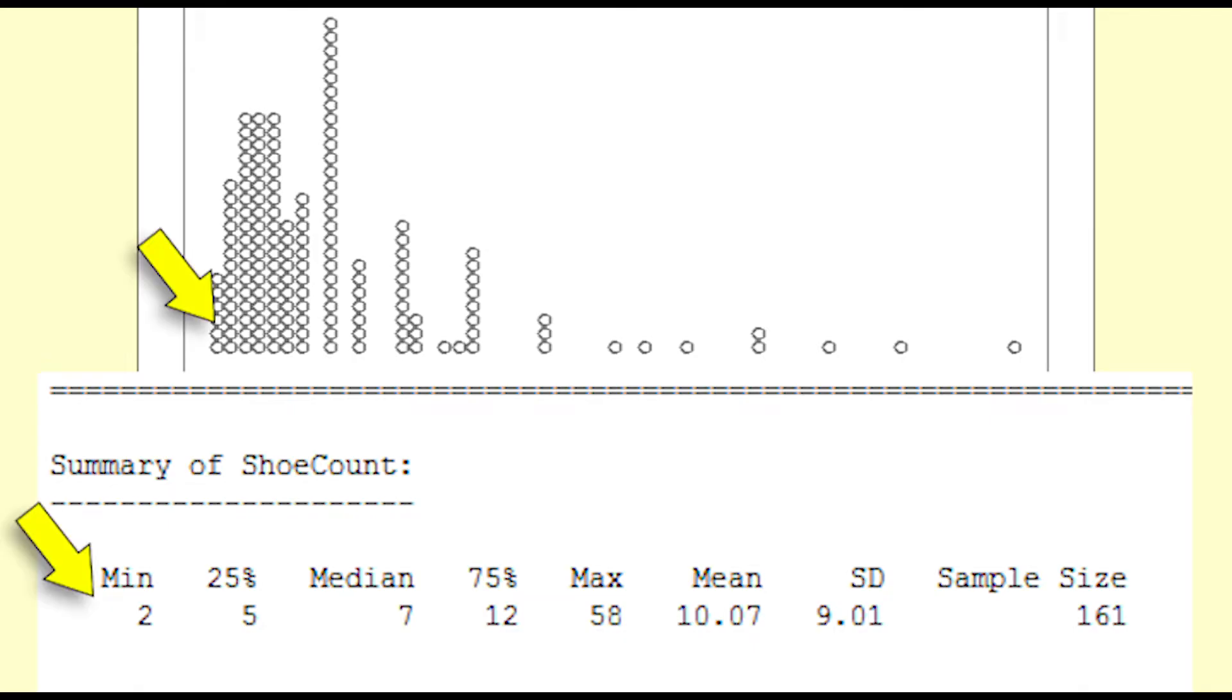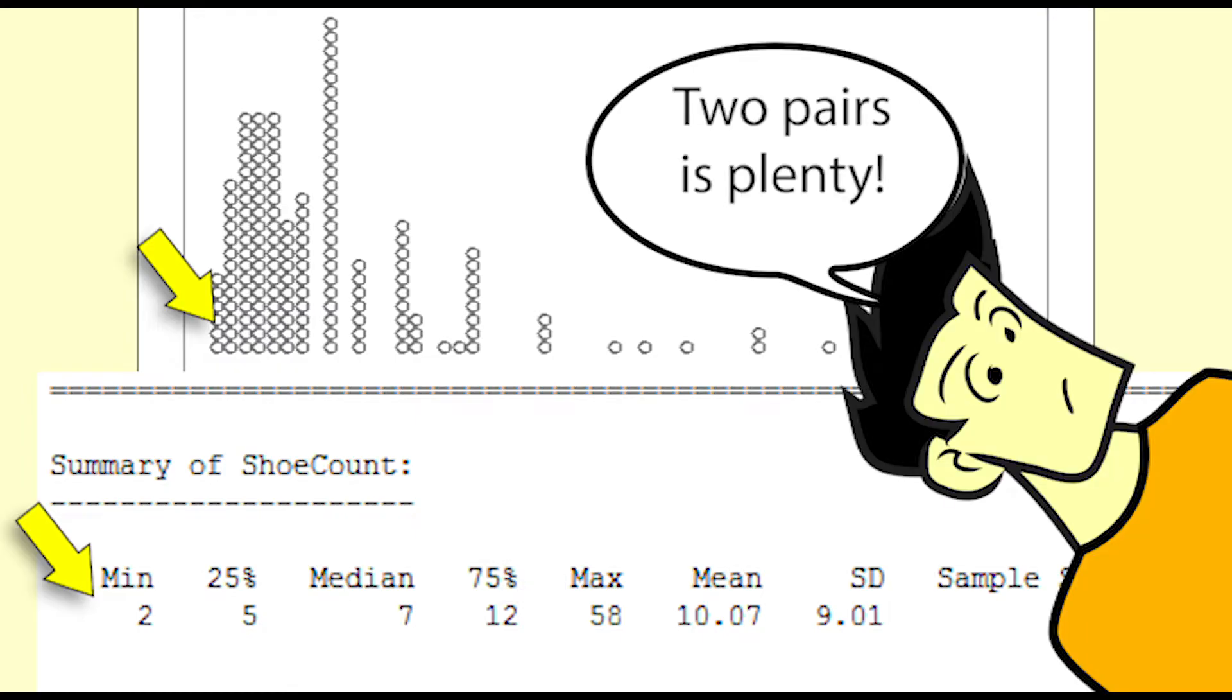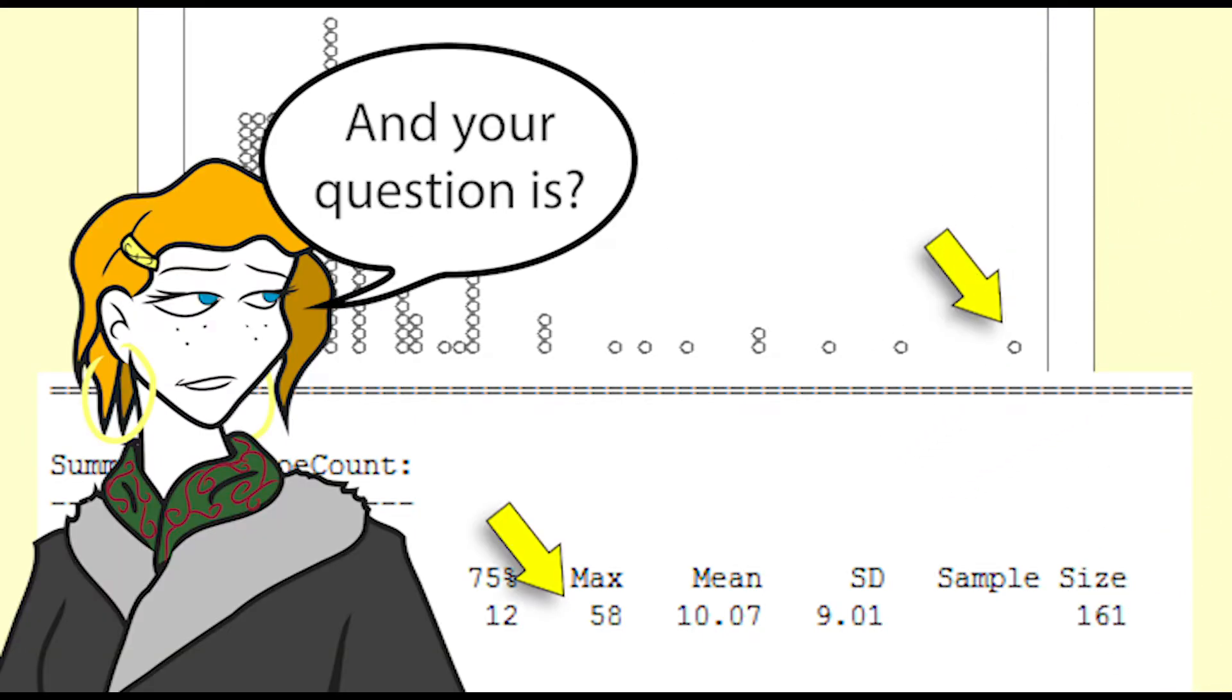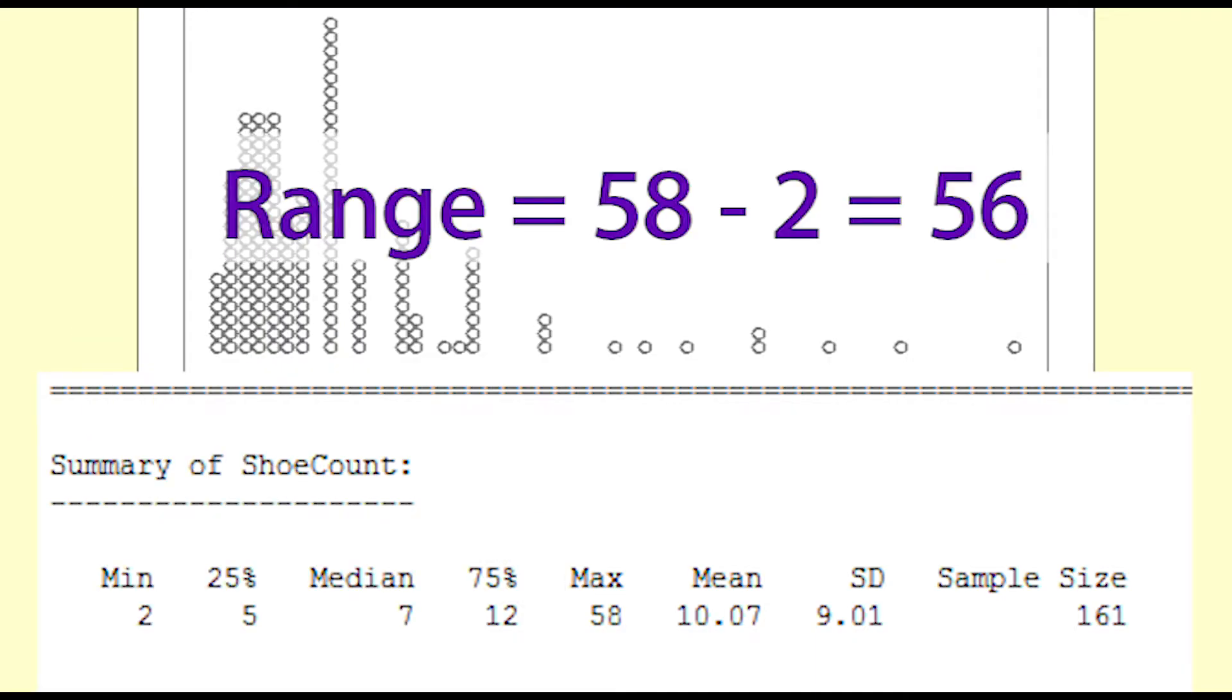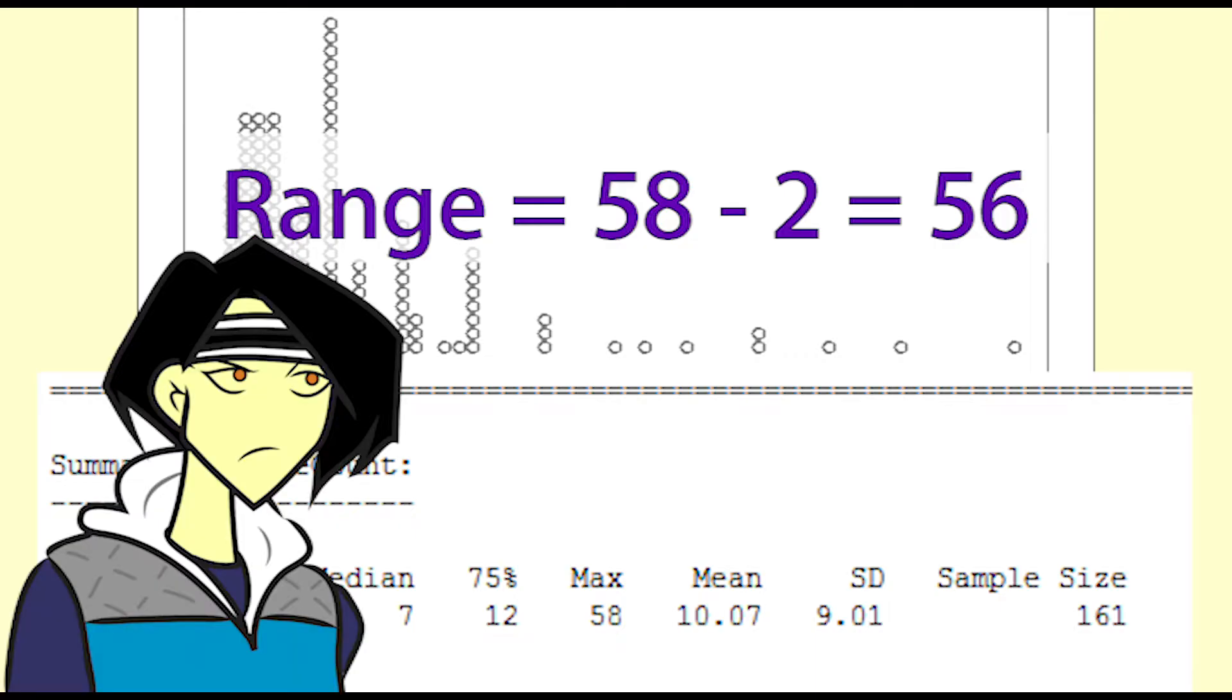The range of the data is from 2 to 58. At least one student said he had just 2 pairs of shoes and one student said she had 58 pairs. We could say that the range is 58 minus 2 which is 56. This is not a good indication of the actual spread of the data as just one value 58 is making a big difference to the range.